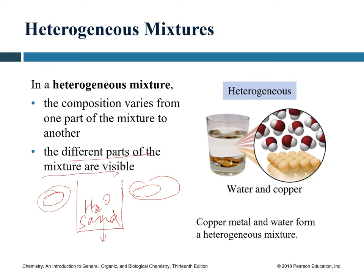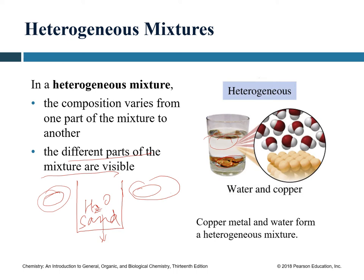In a heterogeneous mixture, the composition of one part is different from another part, and the different components are visible — for instance, with sand and water you can easily distinguish between them because they don't mix well together. You can also easily see where the water is and where the copper is.